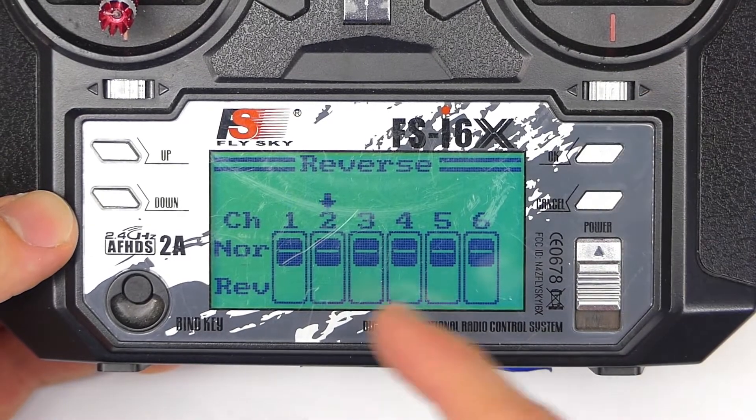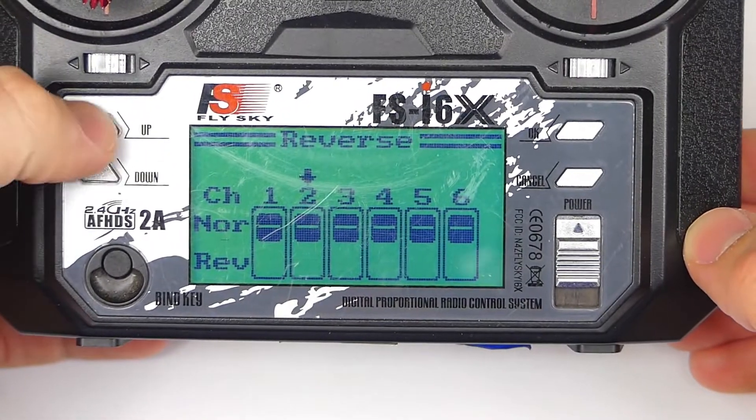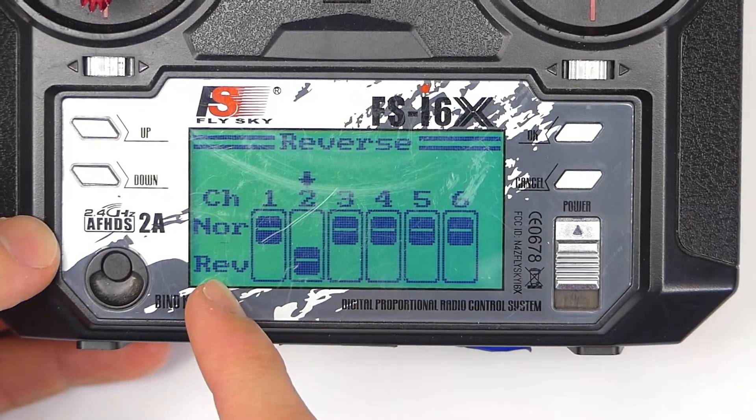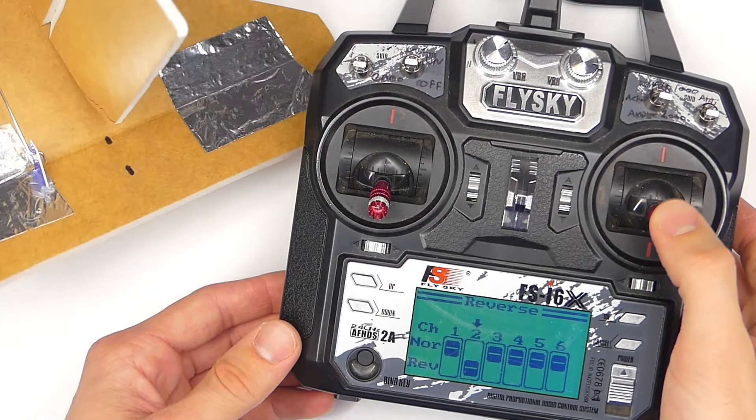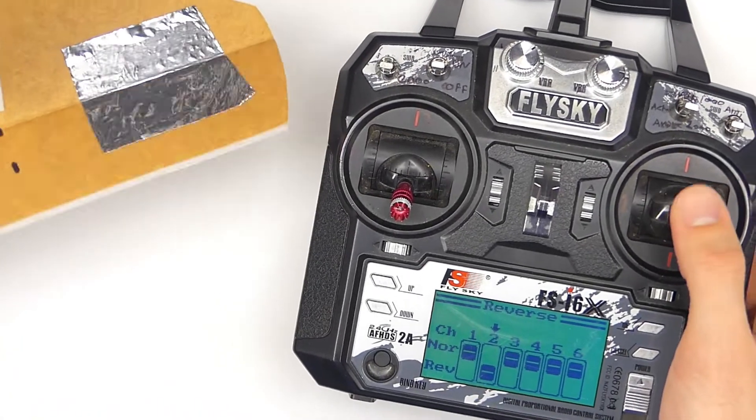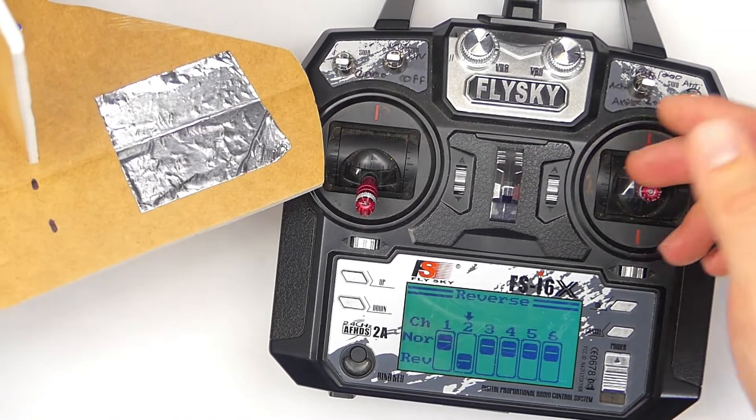In this case, we want to select channel 2, which is our elevator channel right here, and so we're just going to use the up or down arrow to change it from normal to reverse. So what that's going to do is actually change the direction that this is going. So this is actually going in the correct direction now that we reversed it.